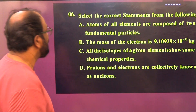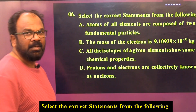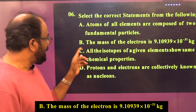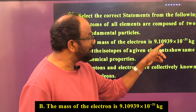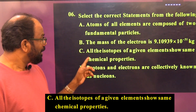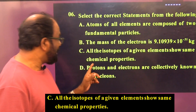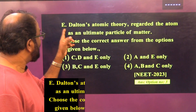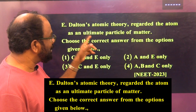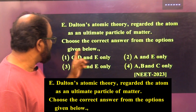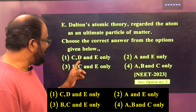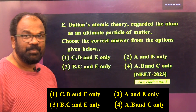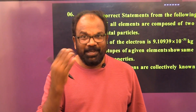Question number six: Select the correct statement from the following. A) Atoms of all elements are composed of two fundamental particles. B) The mass of the electron is 9.10939 × 10⁻³¹ kg. C) All isotopes of a given element show the same chemical properties. D) Protons and electrons are collectively known as nucleons. E) Dalton's atomic theory regarded the atom as an ultimate particle of matter. Options: 1) C, D, E only; 2) A and E only; 3) B, C, E only; 4) A, B, C only.